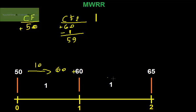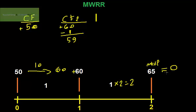During the second period, each stock generates a $1 dividend, multiplied by 2, giving a $2 total dividend. The market price at the end of the period is going to be equal to $65, which means an increment of $5 per stock. Unfortunately, the investor requested to withdraw all the amount and close the account. The third cash flow is going to be $65 multiplied by 2, which equals $130.